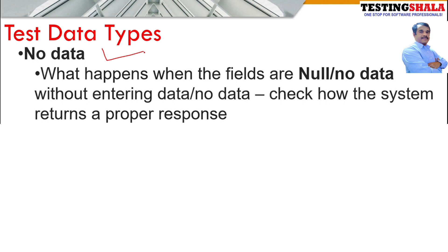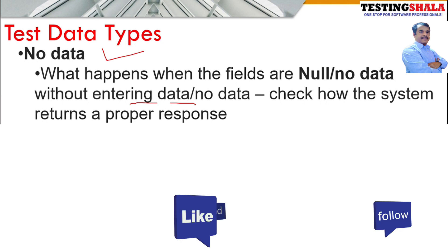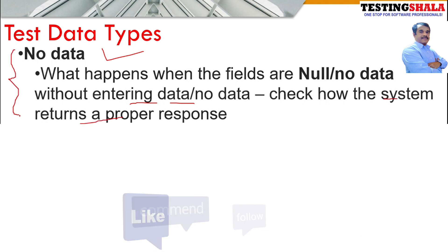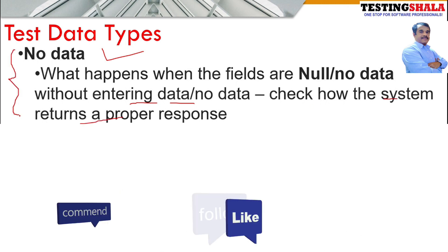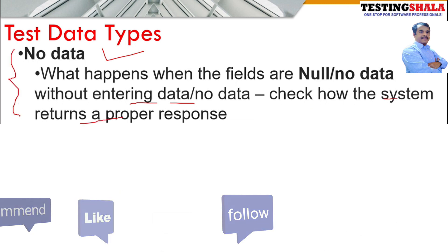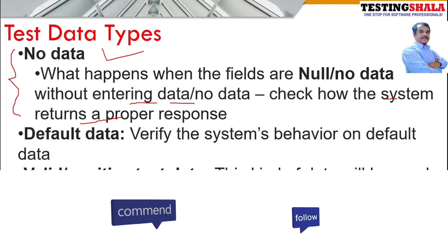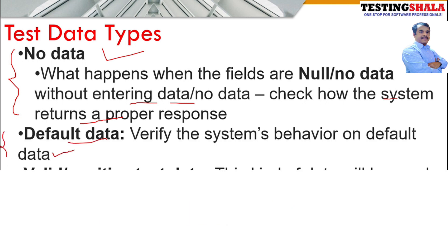The first type is no data at all. For whatever fields we have in a web application, mobile application, or any screen, we leave empty spaces — no value is entered — and then we try to operate the application to check how the system will behave. That is the first type: no data.